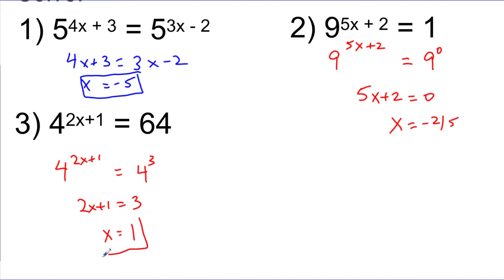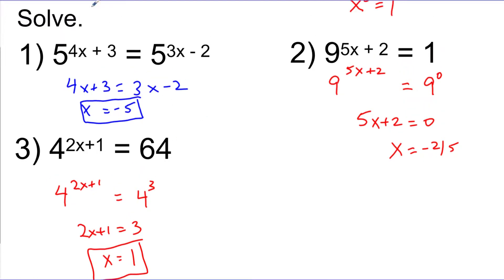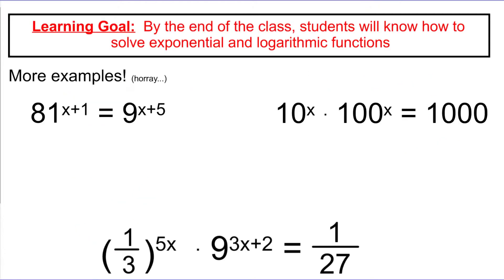Remember: whenever it says solve, we should be able to take the answer and plug it back in to verify. If I plug x equals 1 in, this says 2 times 1 plus 1, which is 3. So it becomes 4 to the 3rd, which is 64. The answer checks out — that is a correct solution.